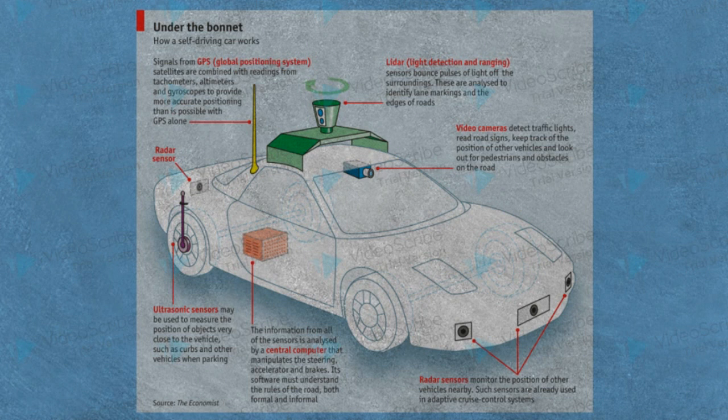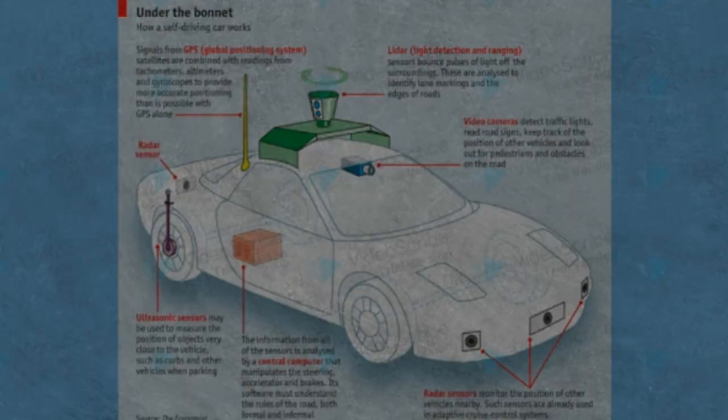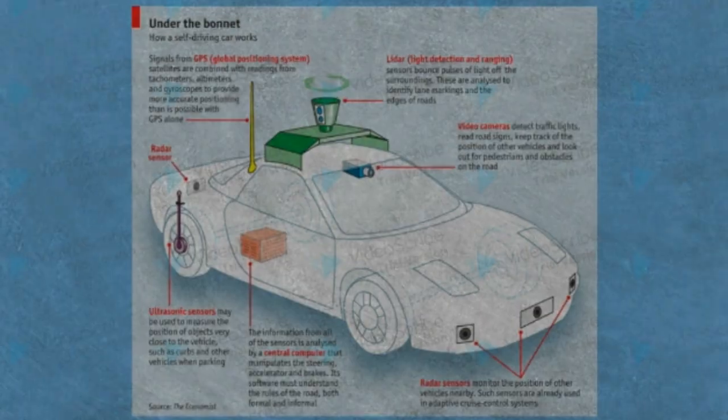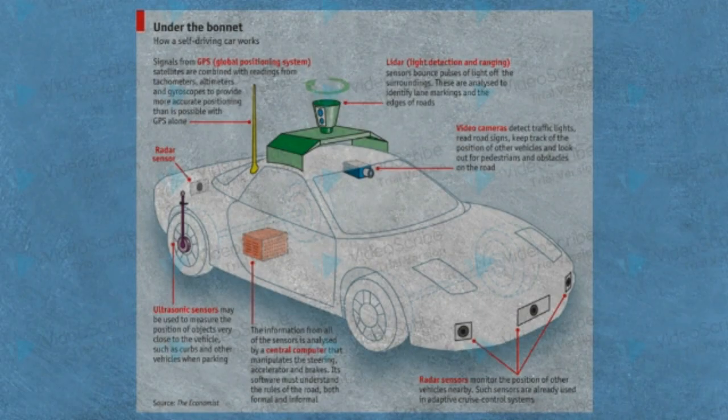LiDAR — Light Detection and Ranging — sensors scan the surroundings. These scans are analyzed to identify the markings and the edges of the road.